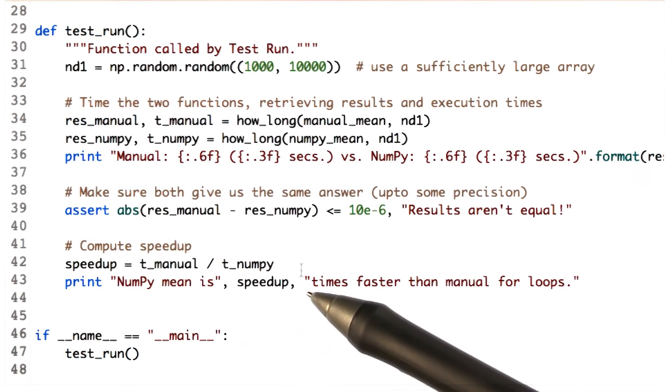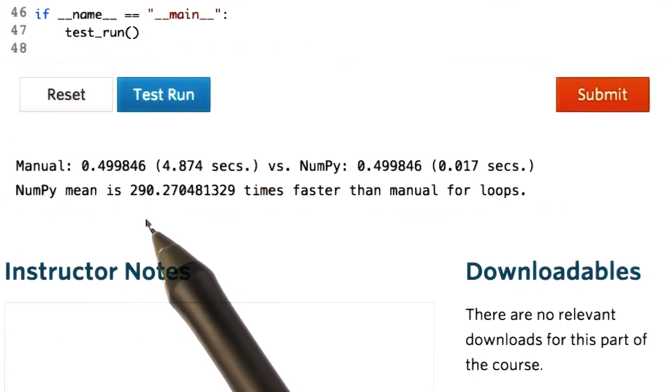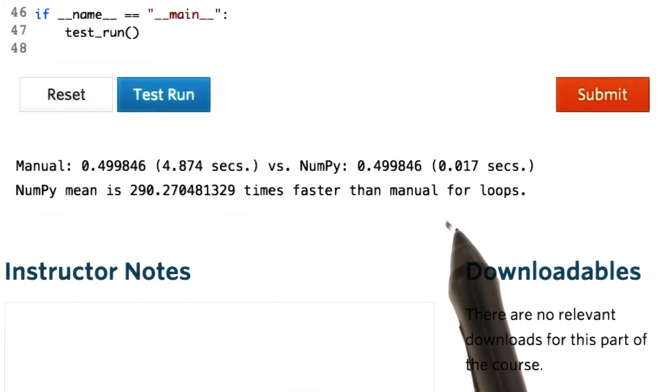We also compute the rate of how fast NumPy is. And the numbers are crazy. It's about 290 times faster than the manual for loops.